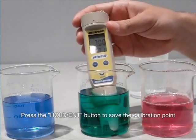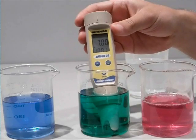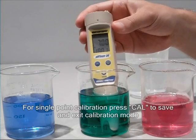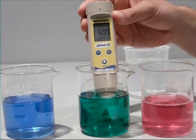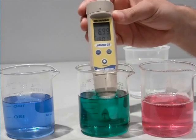If you are doing a single point calibration, press the CAL key at this point to exit calibration mode. If you are doing a multi-point calibration, the lower display will now switch between 4 and 10, the other calibration buffers.